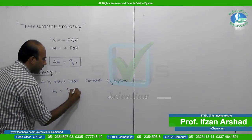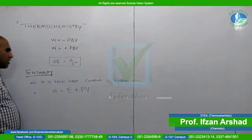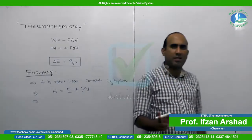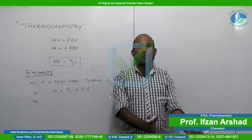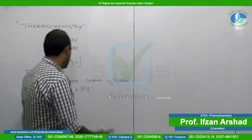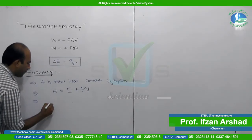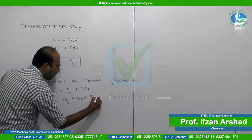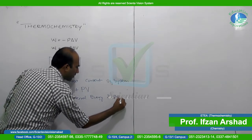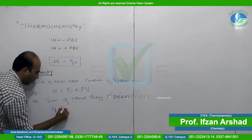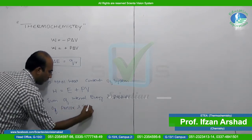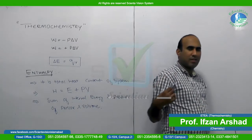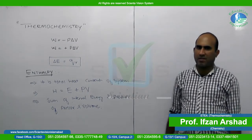So enthalpy is the sum of internal energy plus the product of pressure and volume. We can write another definition: enthalpy is the sum of internal energy and the product of pressure and volume. So what is enthalpy? It is the sum of internal energy and the product of pressure and volume.